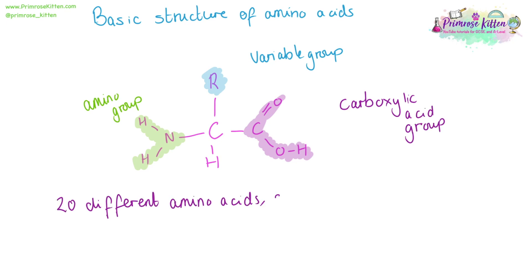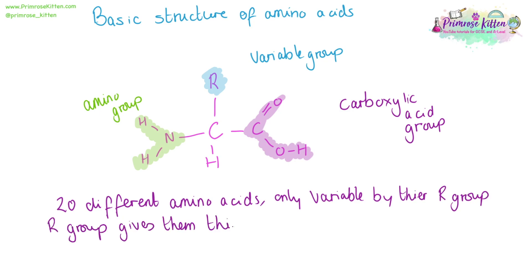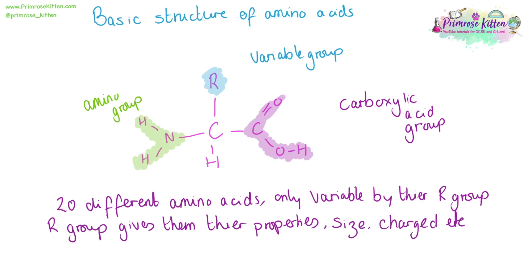There are 20 common different amino acids, and the only variability between them is in their R-group. The R-group gives them their properties. R-groups can vary based on size, based on charge, and what type of bonds they form.